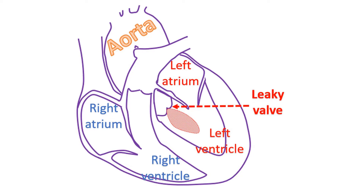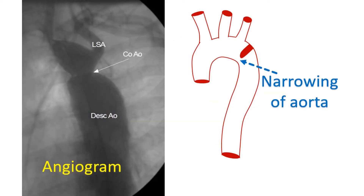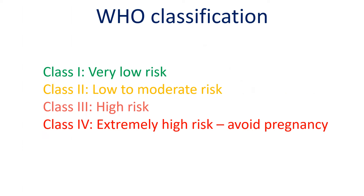Leaks across the heart walls are better tolerated than narrowing of heart valves. Especially high risk is present in a condition known as coarctation of aorta, in which there is a discrete narrowing of a region of the aorta. The aorta is the major blood vessel arising from the heart, taking blood to the whole body. When there is obstruction, blood pressure in the part upstream to the obstruction is high. This can predispose to breaks in the inner lining of the aorta known as aortic dissection, which is a very high risk condition. The World Health Organization has classified heart diseases into four risk categories with regard to pregnancy.